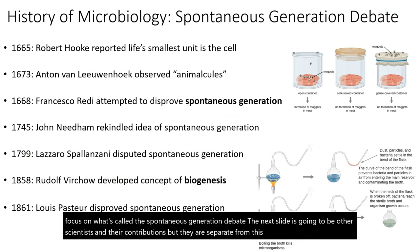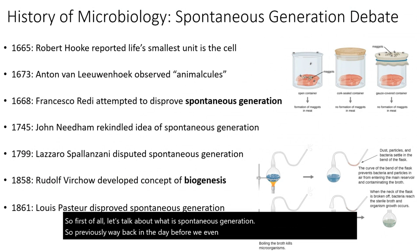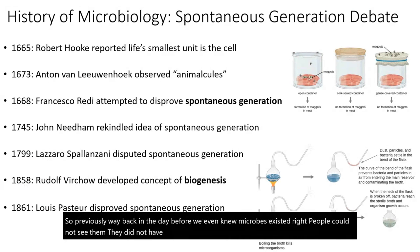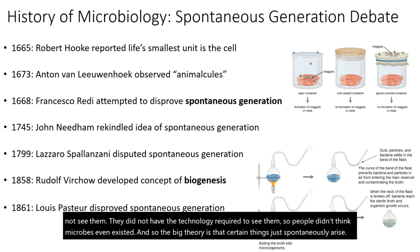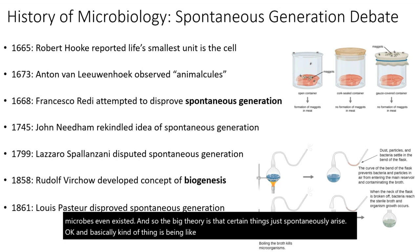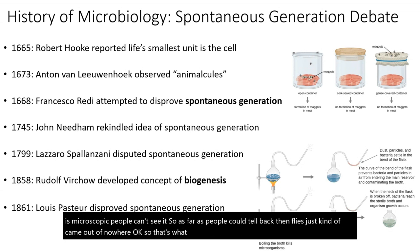Let's talk about what spontaneous generation is. Way back in the day, before we even knew microbes existed, people could not see them — they did not have the technology required to see them. So people didn't think microbes even existed. The big theory was that certain things just spontaneously arise. Think of it like, poof, there's a fly — because the larval form of a fly is microscopic. People couldn't see it, so flies just kind of came out of nowhere. That's what spontaneous generation is.